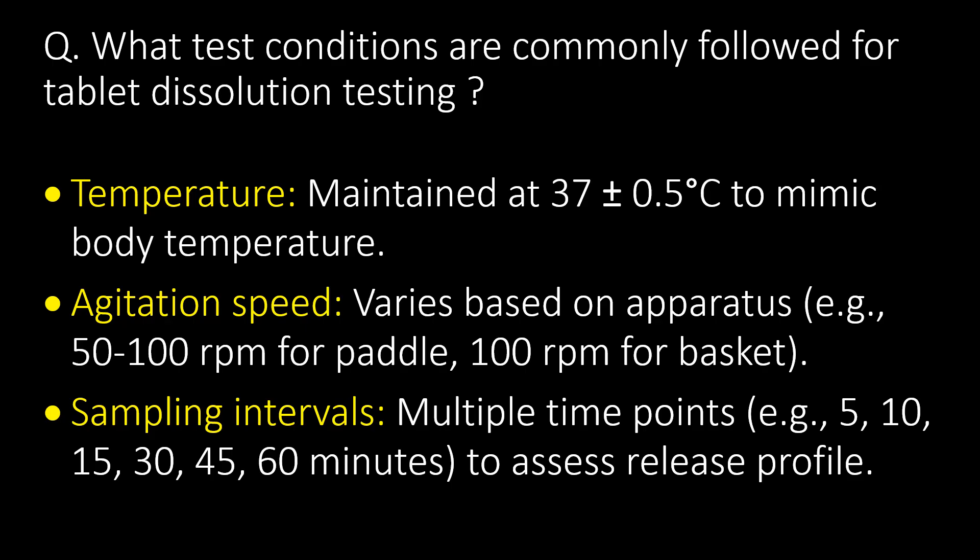What test conditions are commonly followed for tablet dissolution testing? First, temperature is maintained at 37 ± 0.5°C to mimic body temperature. Second, agitation speed varies based on apparatus — for example, 50–100 rpm for paddle type and 100 rpm for basket type. Third, sampling intervals are taken at multiple time points — for example, 5, 10, 15, 30, 45, and 60 minutes — to assess the release profile.